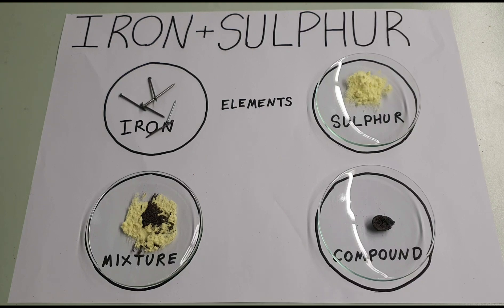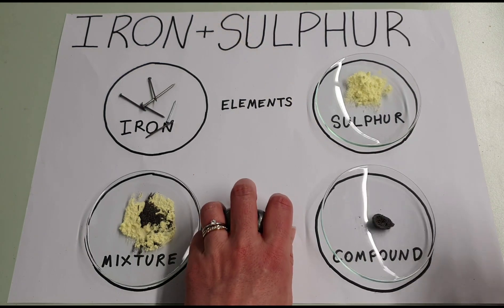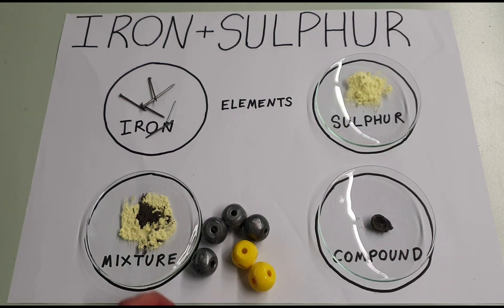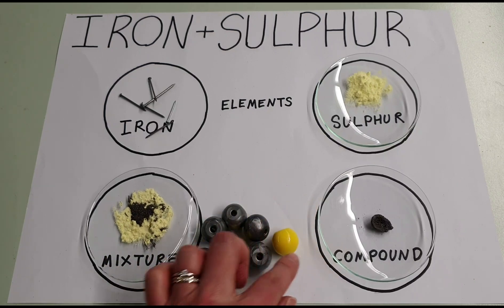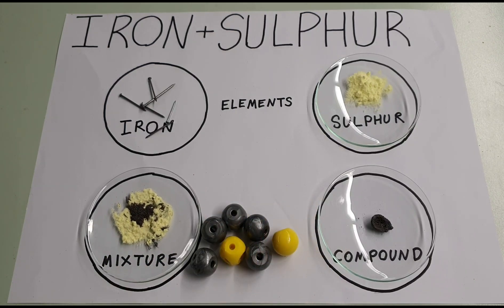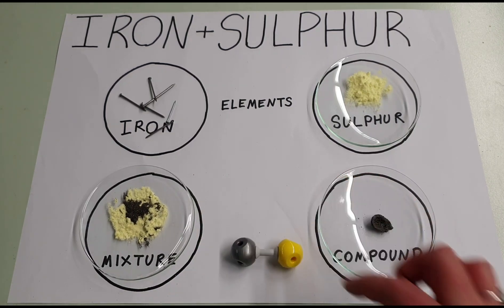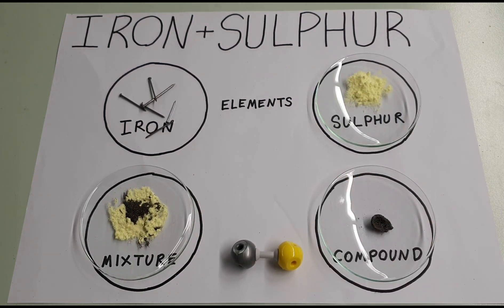So just to summarize: your iron element and your sulfur element can be mixed together to make your mixture — that's what a mixture looks like on a molecular level in a very simplistic form. But for the compound, you actually have a bond now between the iron and the sulfur, and that was created in the chemical reaction that was initiated by some heat to create the compound iron sulfide.